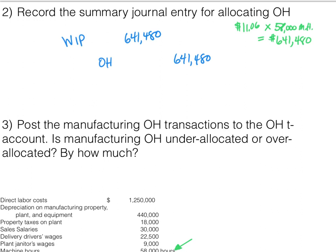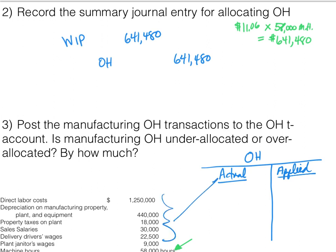Now we post manufacturing overhead transactions to the overhead T-account. The left side is actual overhead and the right side is applied or allocated overhead. From the actual cost list: direct labor cost is not overhead. Depreciation on property, plant, and equipment is overhead — $440,000. Property taxes on the plant are overhead. Sales salaries and delivery driver wages are period costs — selling costs expensed when incurred, not product costs. Plant janitor's wages, with the keyword 'plant,' are definitely overhead.